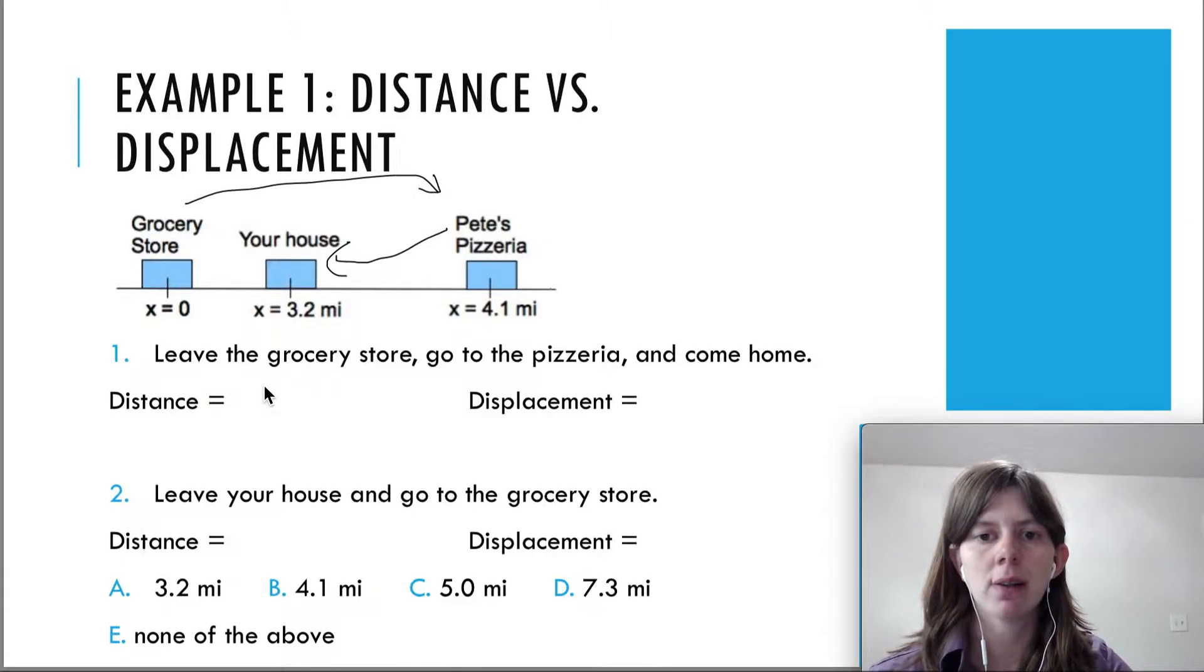So what's the distance? Remember, the distance cares about the total path traveled. So you traveled 4.1 miles to the pizzeria, and then you traveled from here to here.